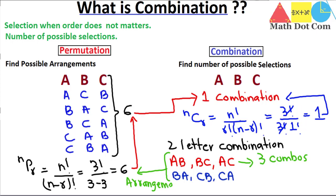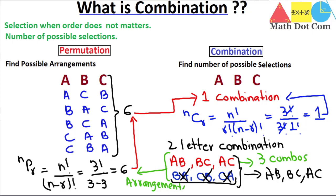This is how combination differs from permutation: in combination, order does not matter. We take distinct pairs from the given word without considering order. So AB equals BA, BC equals CB, and AC equals CA. In combination, BA, CB, and CA are not allowed — we keep only AB, BC, and AC. These three repeated arrangements are removed from the combination formula by dividing by R factorial.